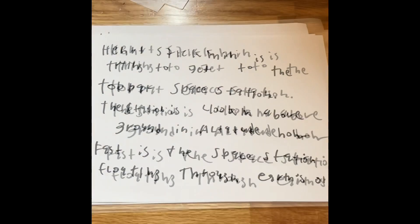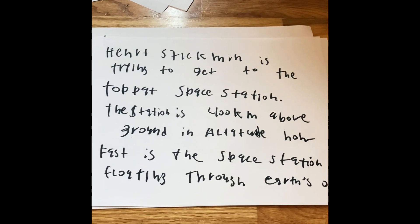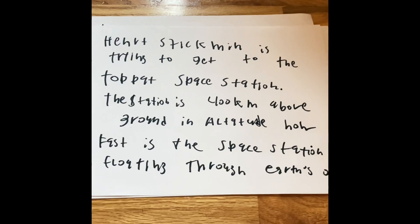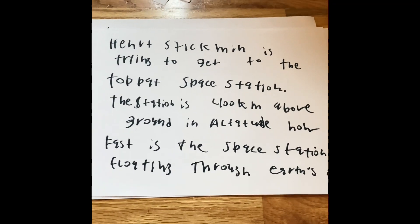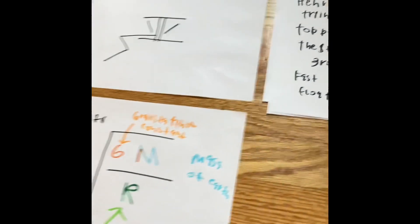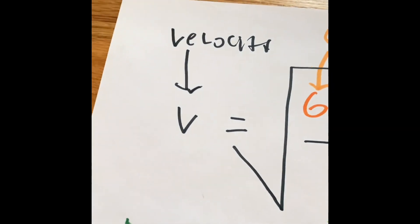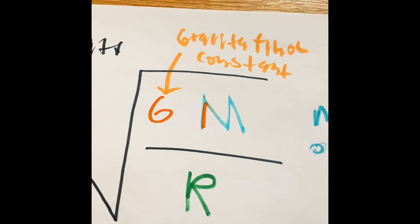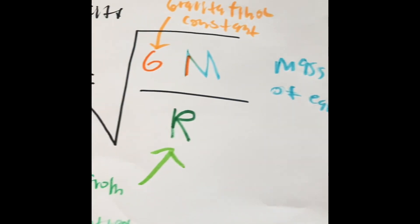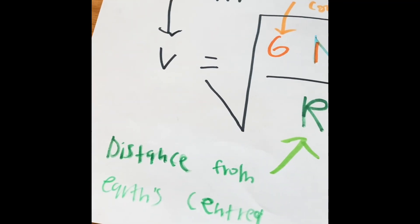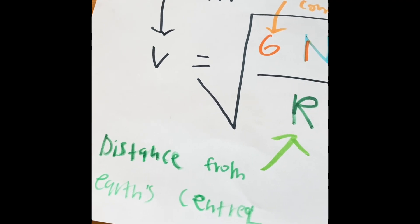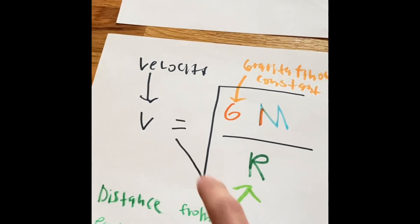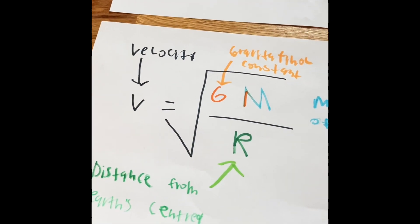So that is what orbital velocity is — trying to find how fast that space station is going. There's a formula we're going to use to help us get our answer. The formula for orbital velocity is: the velocity equals the gravitational constant multiplied by the mass of the Earth, divided by the distance from the Earth's center all the way to the space station. Then we find the square root to get our answer in meters per second.